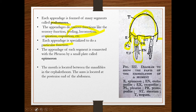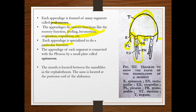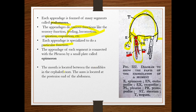The basal segment of the appendage is called the coxa, followed by the basis. From the basis, two branches arise: the inner branch is called the endopodite and the outer branch is called the exopodite. The mouth is located between the appendages in the cephalothorax, and the anus is located at the posterior end of the abdomen.